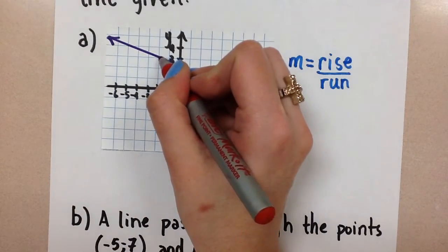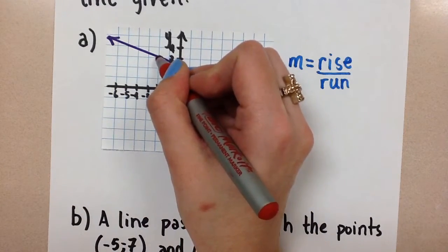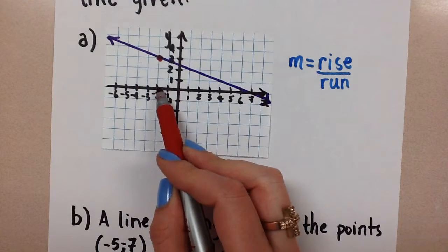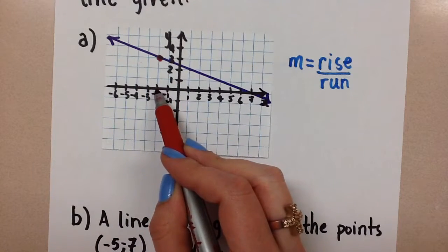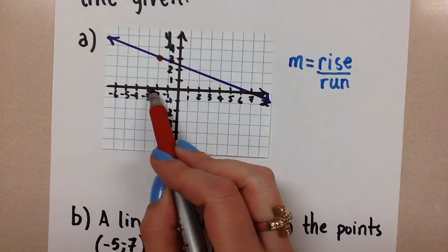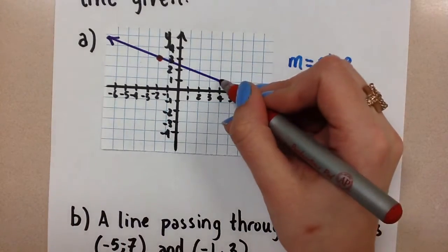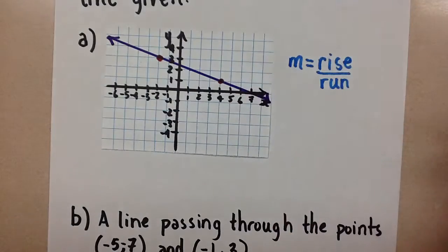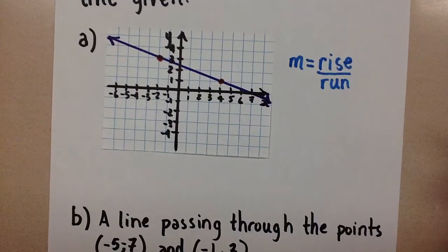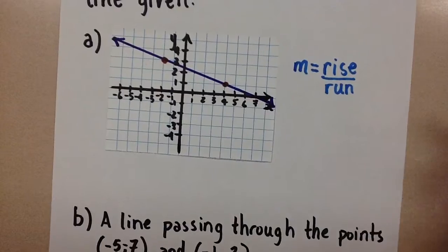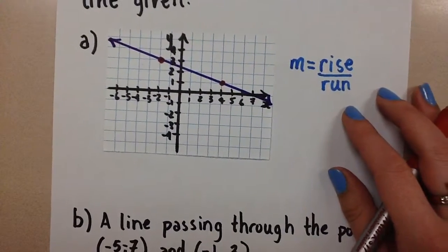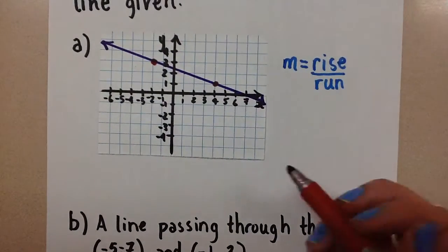When you choose points, you want to always choose points that are on the crossing grid of the graph because then you get to choose nice whole numbers instead of estimating the value in between. So I'm going to choose that one and then I'm going to choose this one right here. Really any two points that you choose to use on the line should give you the same slope value.